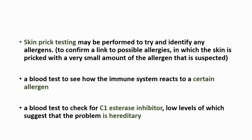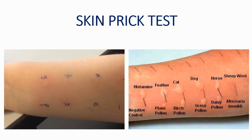In order to diagnose this condition we use several tests, but the most important one is skin prick testing. It checks for immediate allergic reactions and can check as many as 50 different substances. This test is usually used to identify allergies to pollen, mold, and animal dander. We can also use blood tests to see how the immune system reacts to certain allergens. To diagnose hereditary angioedema, we can check C1 esterase inhibitors — low levels will suggest that the problem is hereditary.